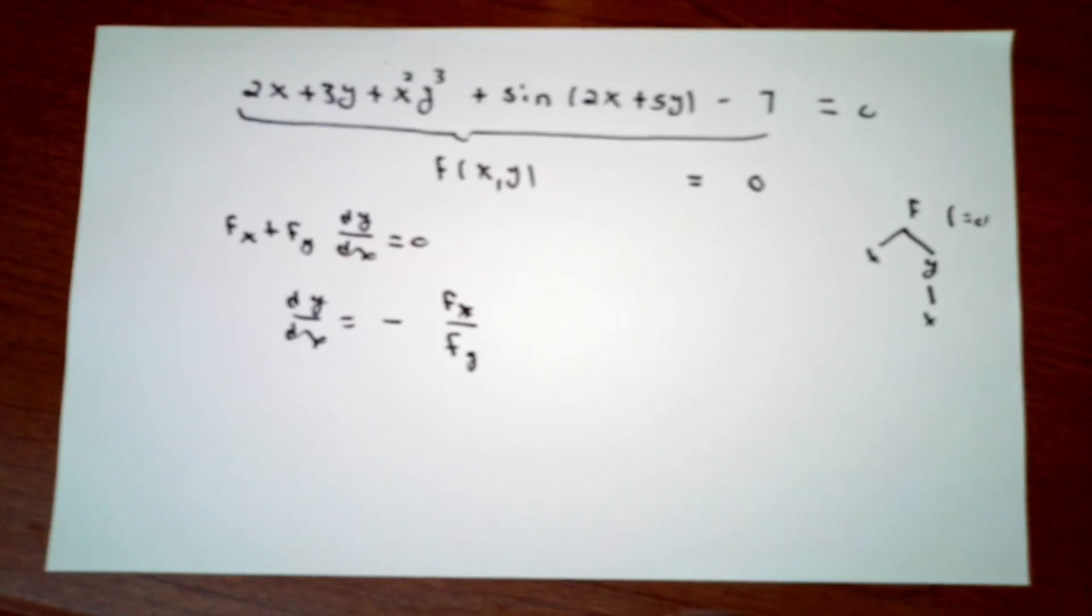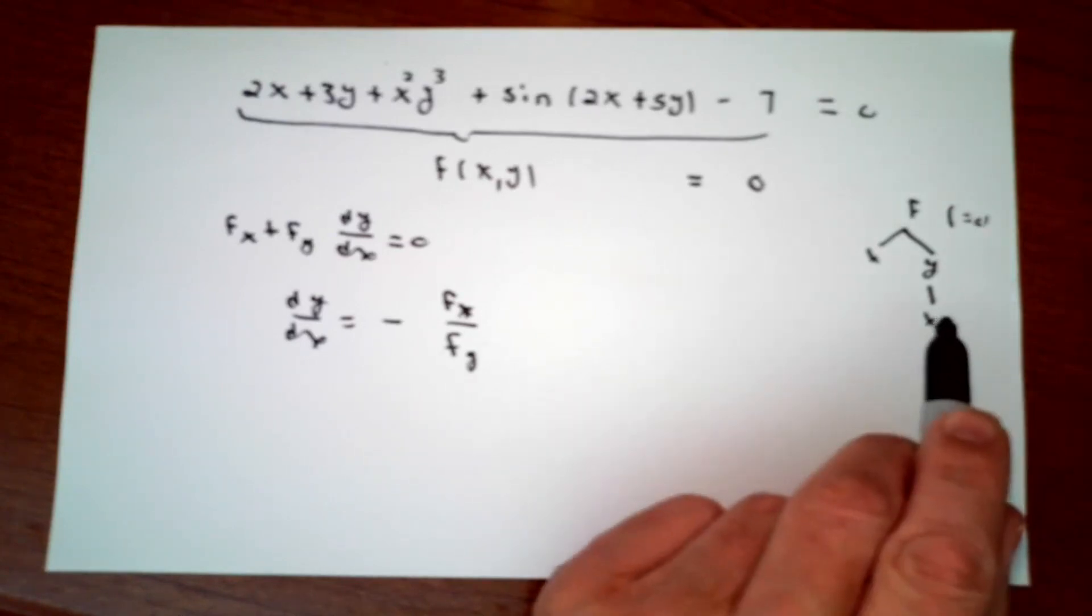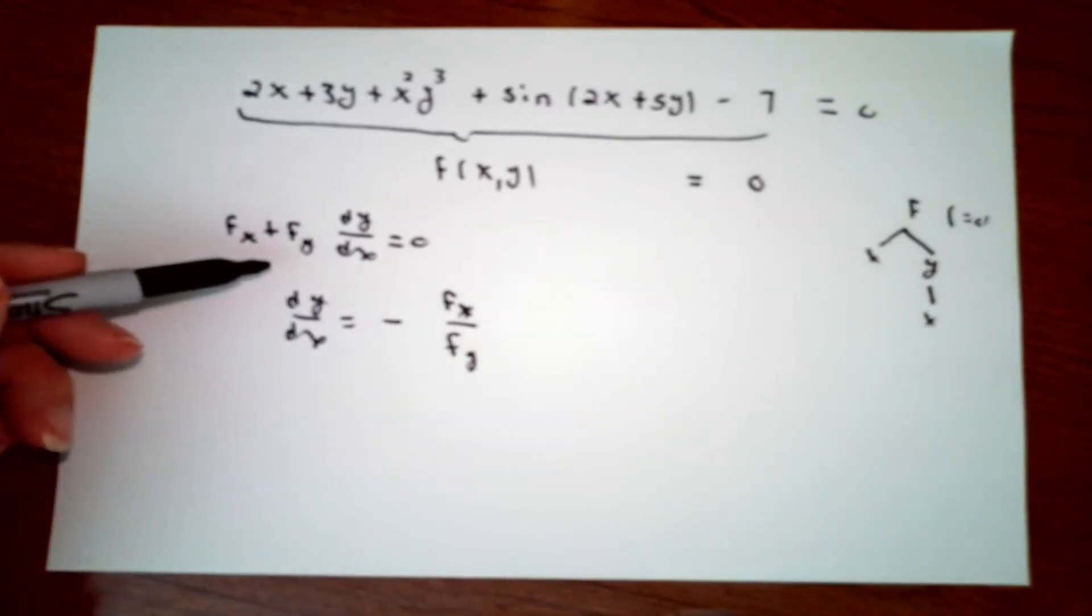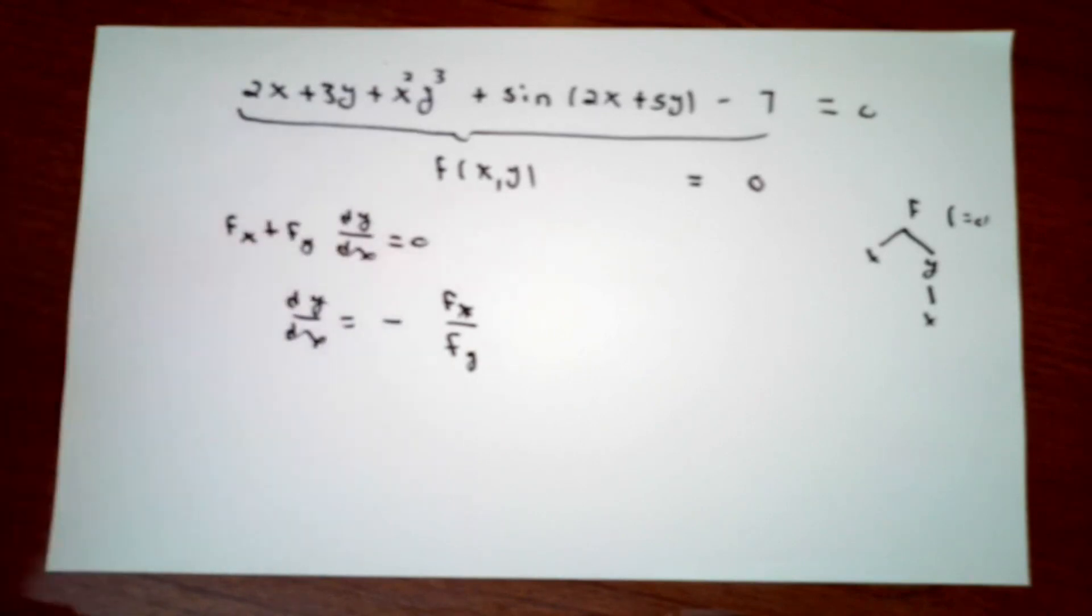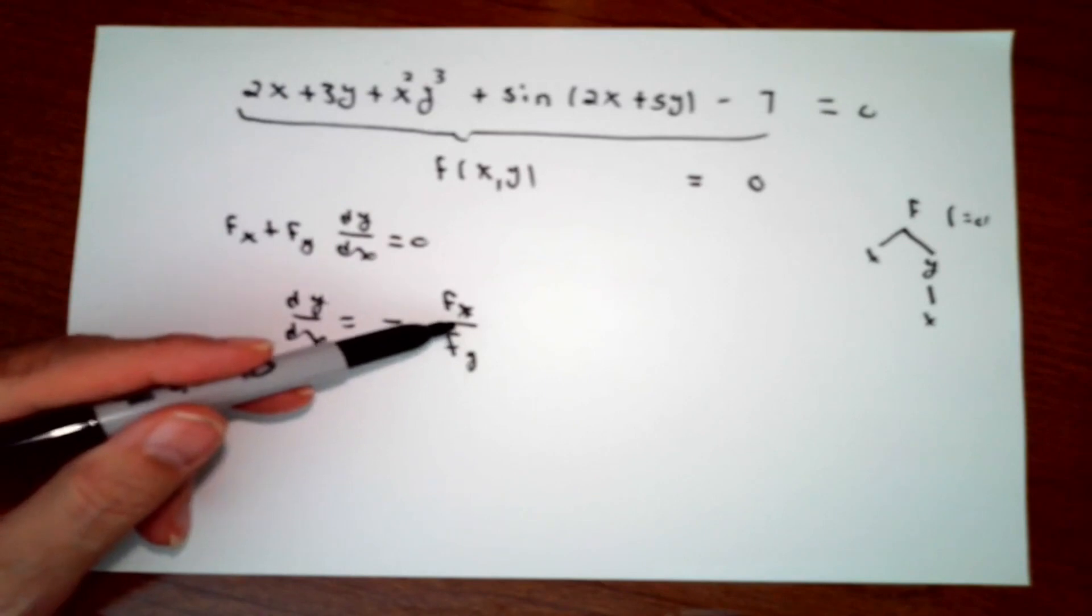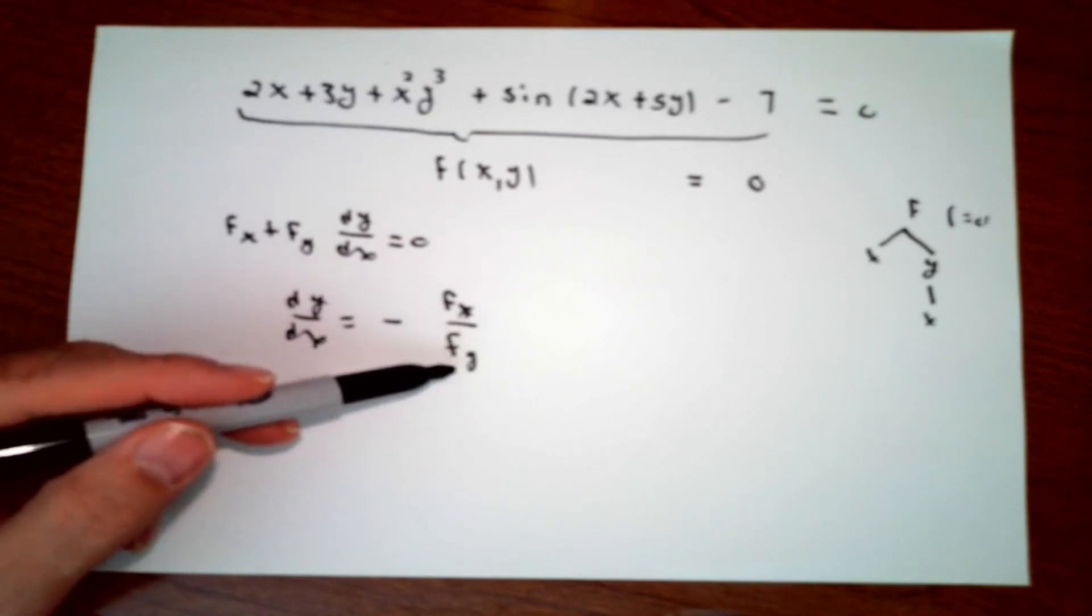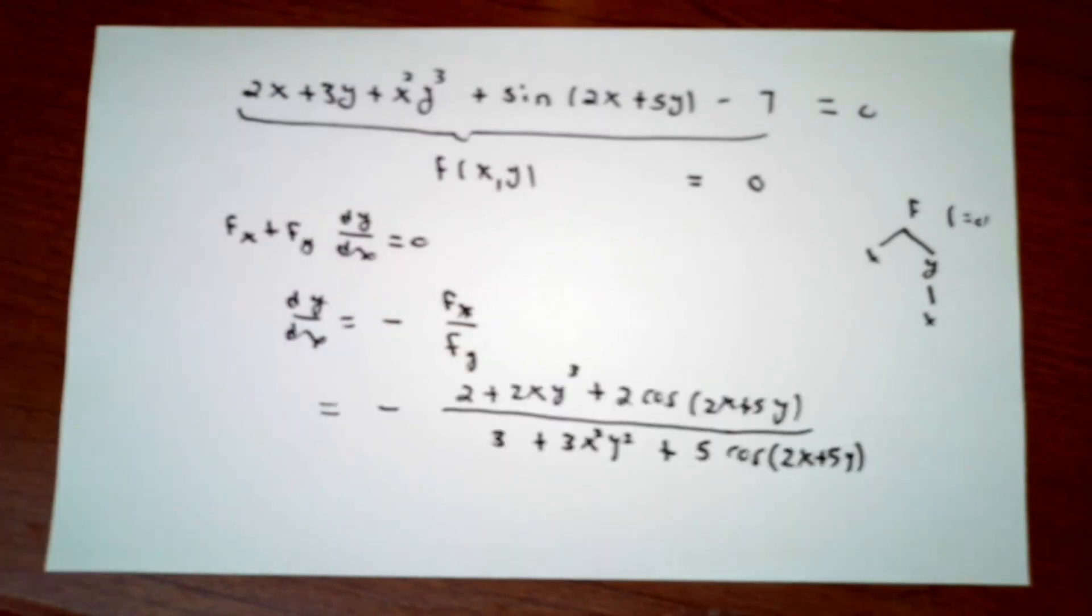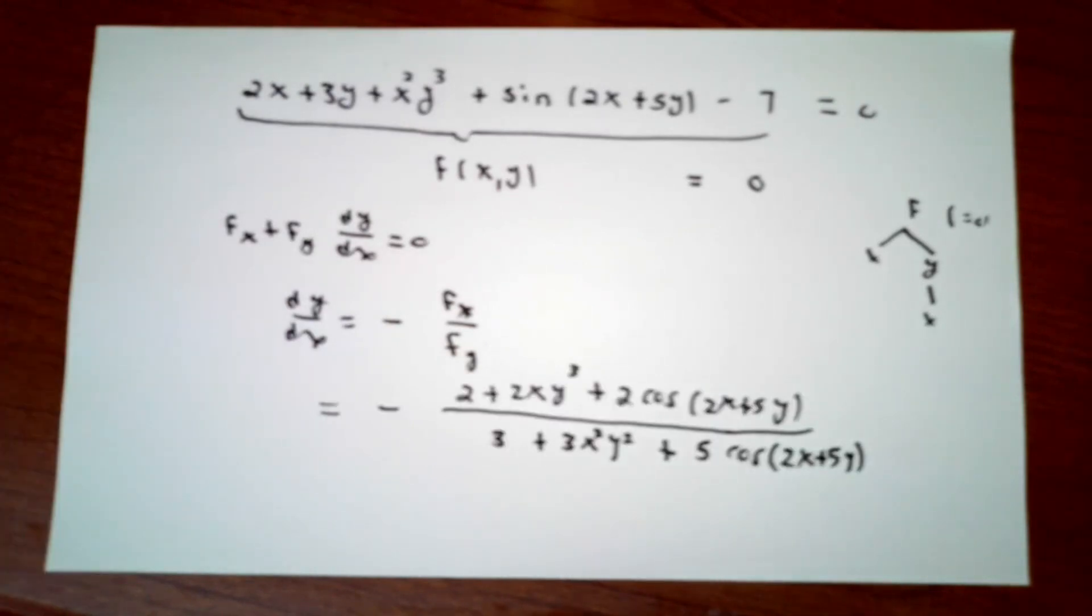Returning to the horrible example that we had before and in the margin drawing my diagram, f sub x plus f sub y dy dx must be zero. dy dx is the negative of partial of f with respect to x divided by partial of f with respect to y. This makes dy dx easy to figure out.